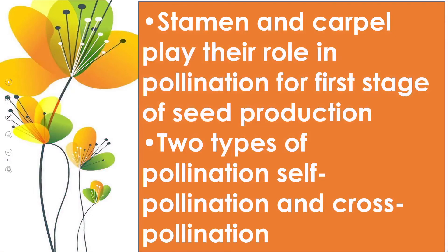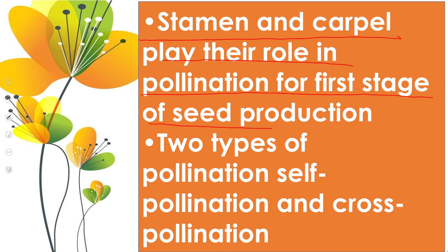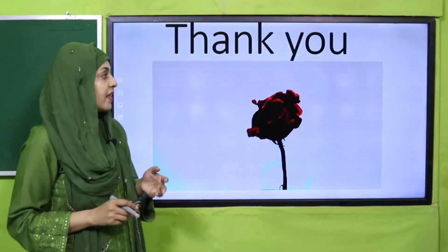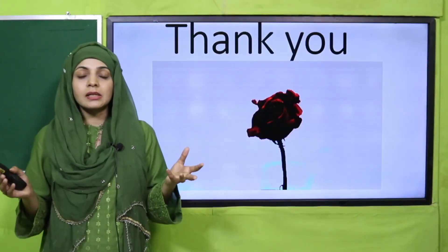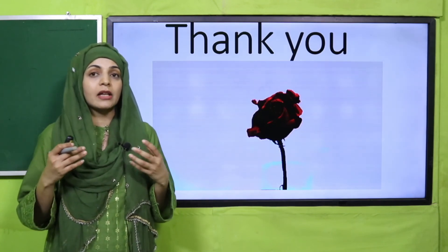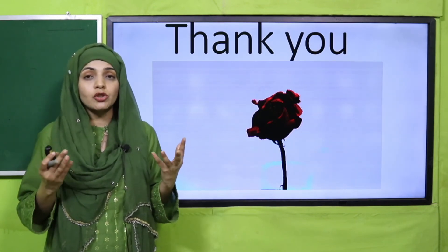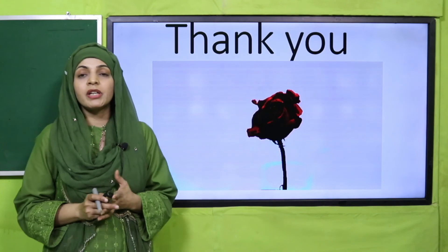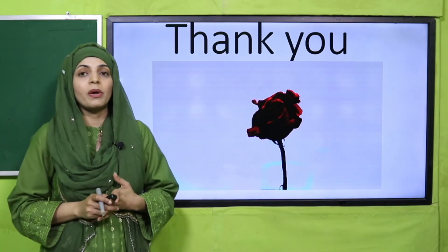What have we learnt today? Today we learnt that the stamen and carpel play their role as the first stage of seed production. We also studied two types of pollination: self-pollination and cross-pollination. I hope you have enjoyed today's lecture. In the next lecture, we will discuss other aspects of the flower and their reproduction processes. Keep everybody around you safe. Have a good day. Thank you so much, and Allah Hafiz.